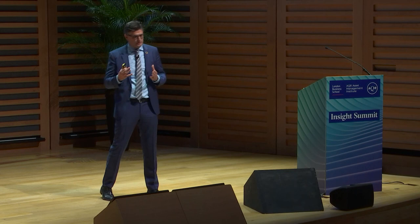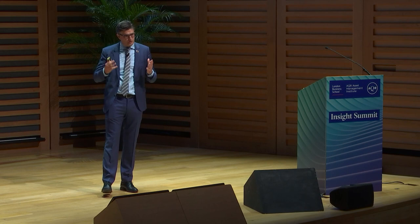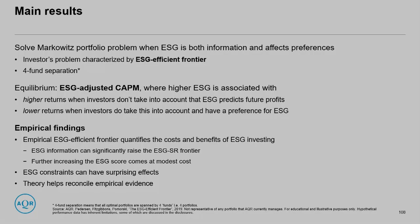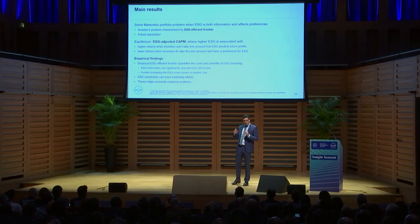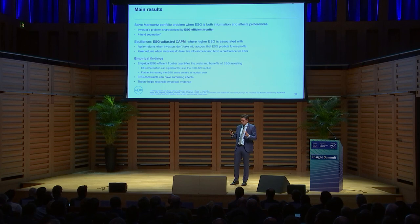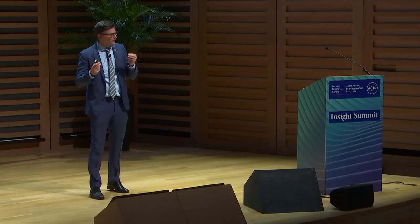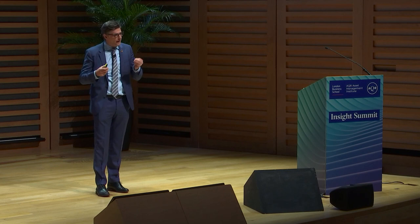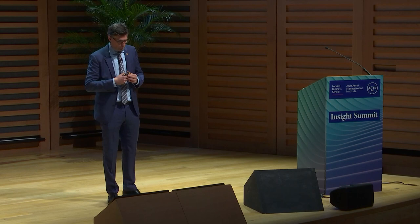The first key result is that we can think about the investor's problem through what we call the ESG efficient frontier. Many of you will know the mean-variance efficient frontier, and we think this ESG efficient frontier will be an equally useful tool to think about your portfolio. We'll talk about why certain measures of ESG may be associated with higher returns and other measures with lower returns. Not all ESG measures measure the same thing, and the theory can help us understand why.